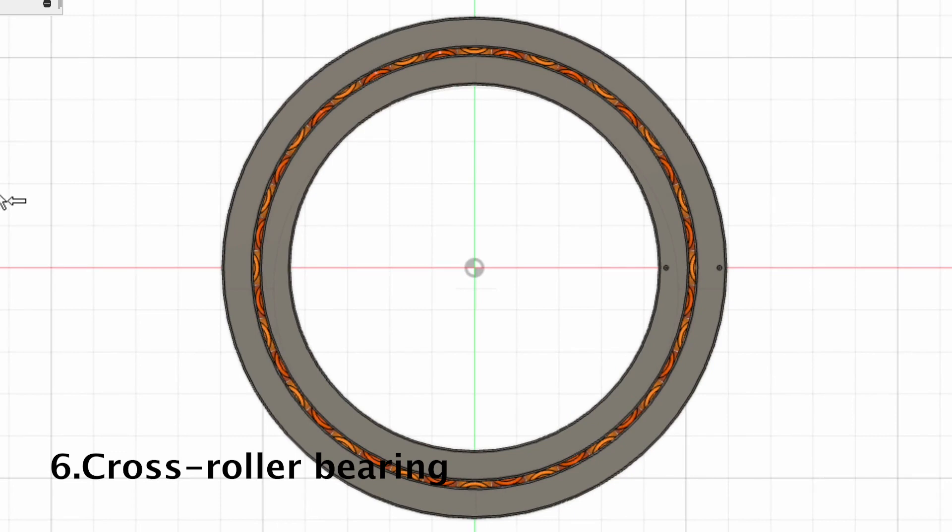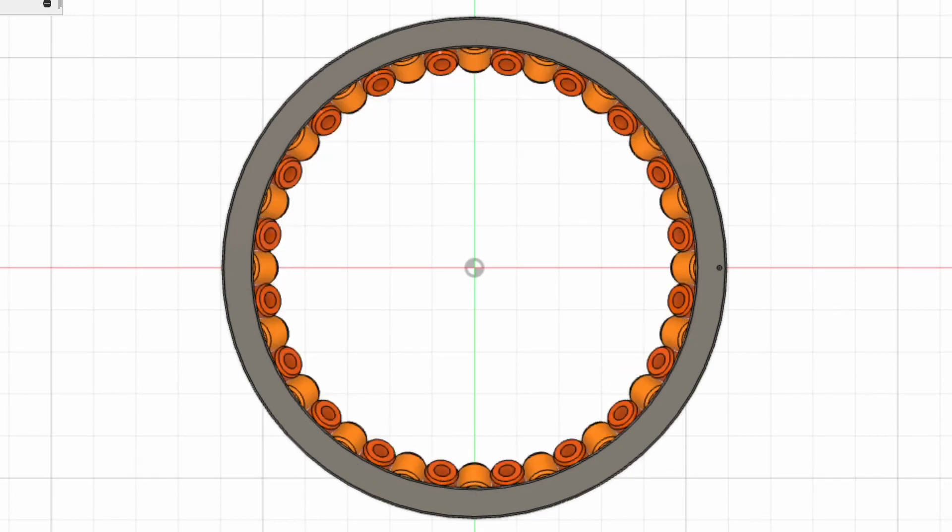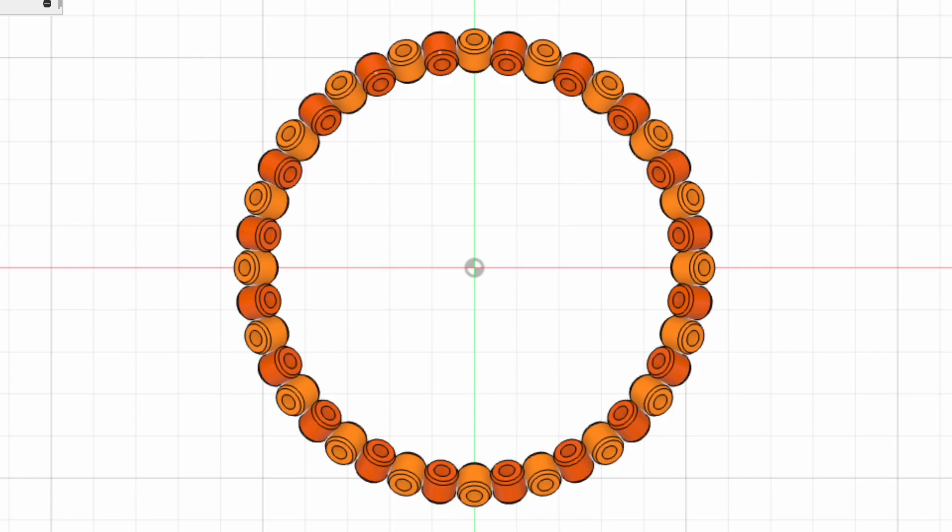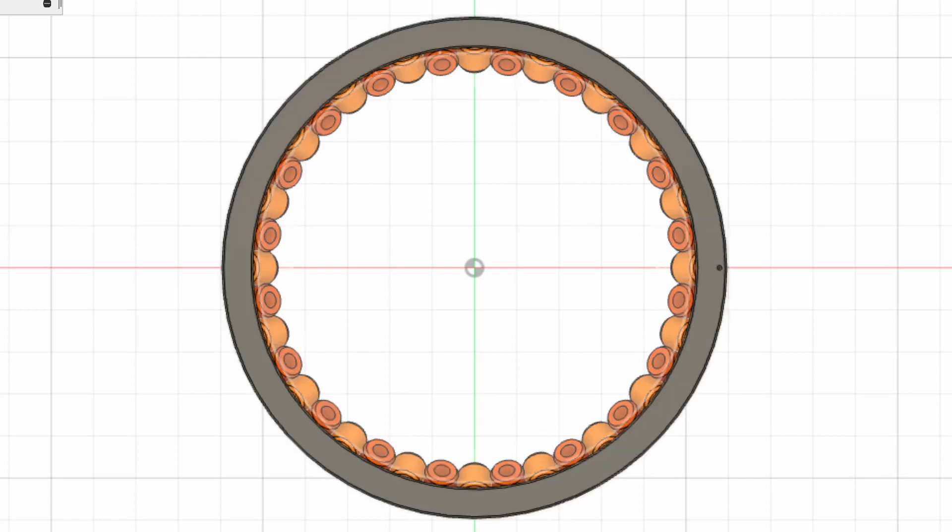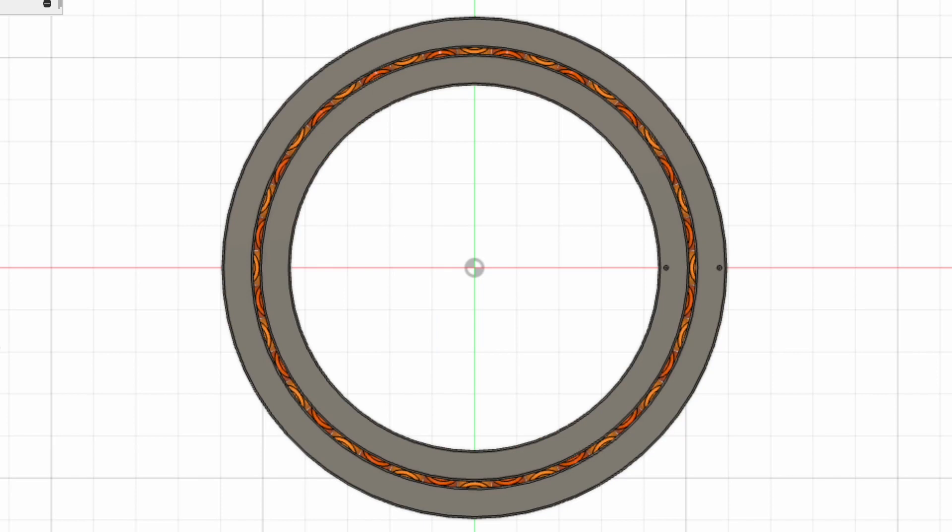Self-made cross-roller bearing. I tried using large industrial bearings, but they have two drawbacks: weight and price. This bearing is cheap. It has zero backlash. It strengthens the structure, especially lateral loads.